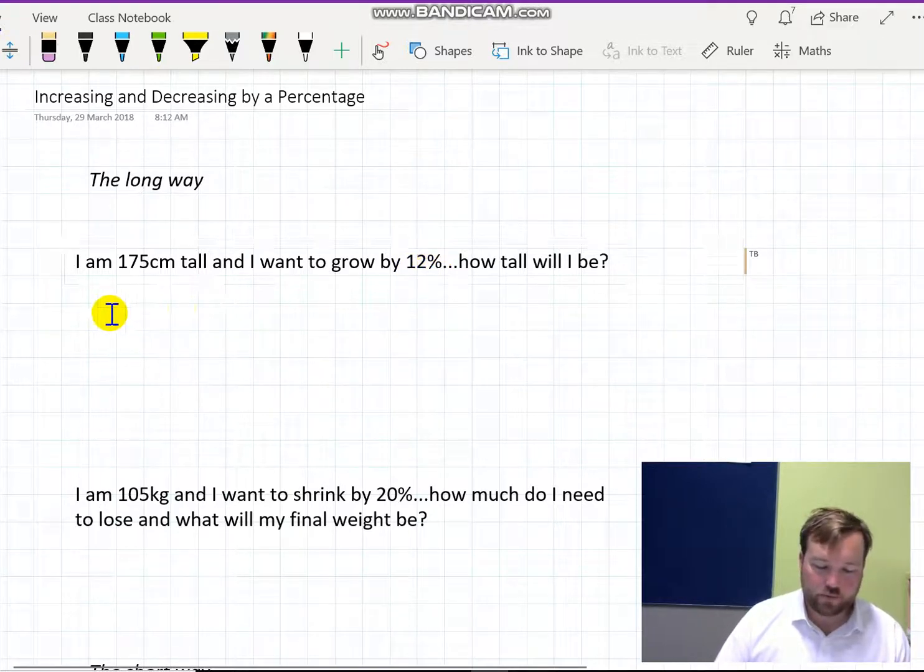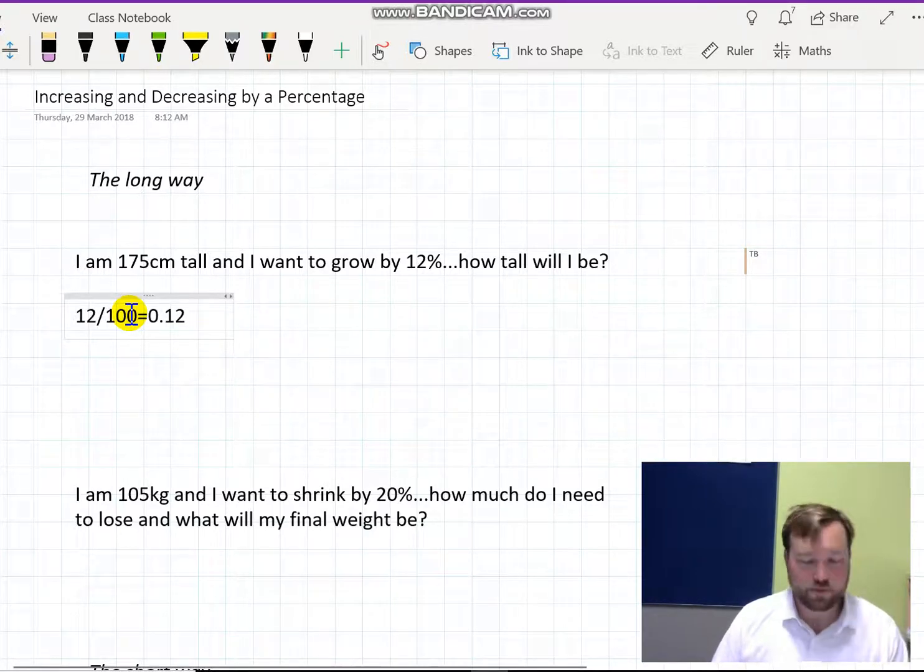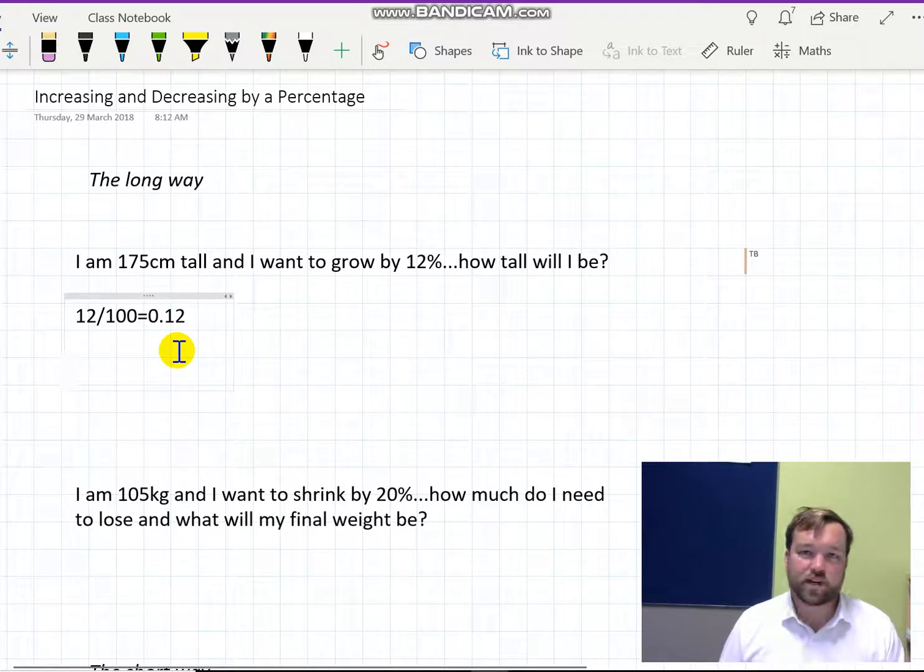And to do that, we convert that 12% into a decimal, which we do by dividing by 100. You can do that in your head pretty comfortably. Just drop the decimal place two back. All right, so once we've got this 0.12, 12% of 175—of, in maths, almost always means times.